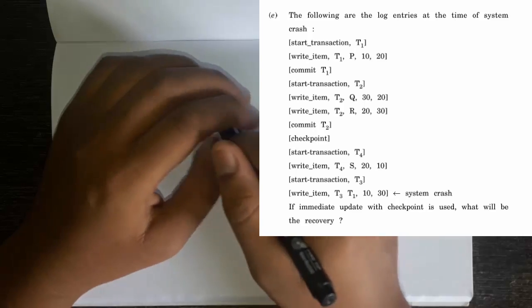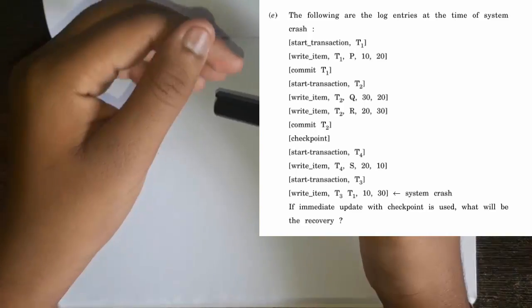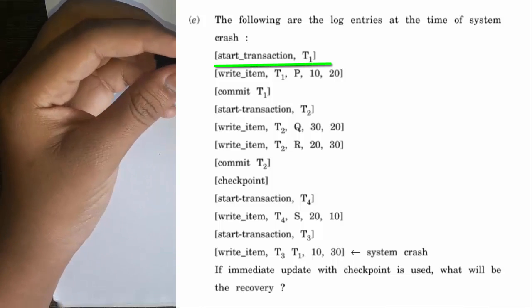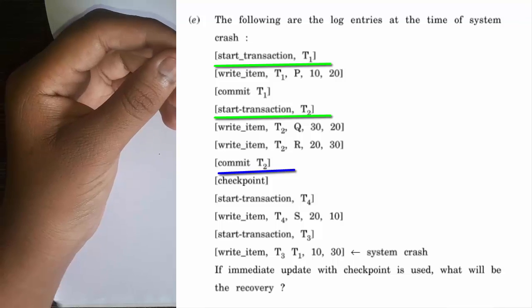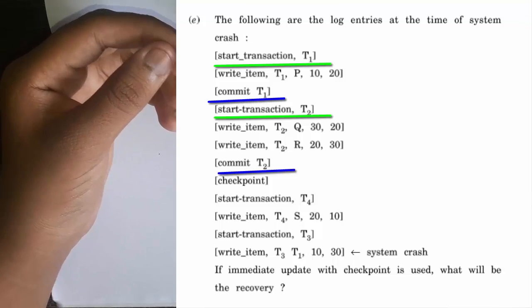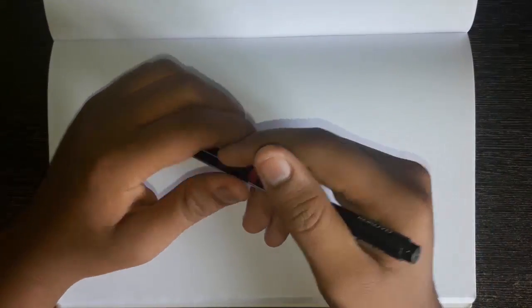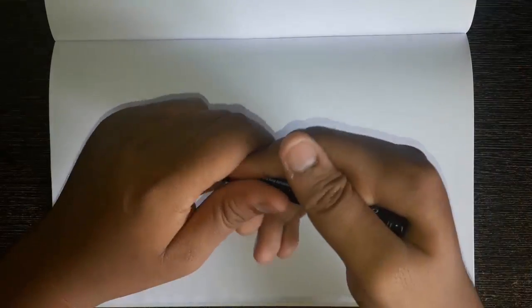This is the question we are going to solve today. This question usually comes in DBMS papers. There are total 4 transactions: start transaction T1, then in the 4th line start transaction T2, then there is a commit T2, a commit T1 in the 3rd line, and then there is a checkpoint. You have to see the transactions which are above the checkpoint and make a diagram.